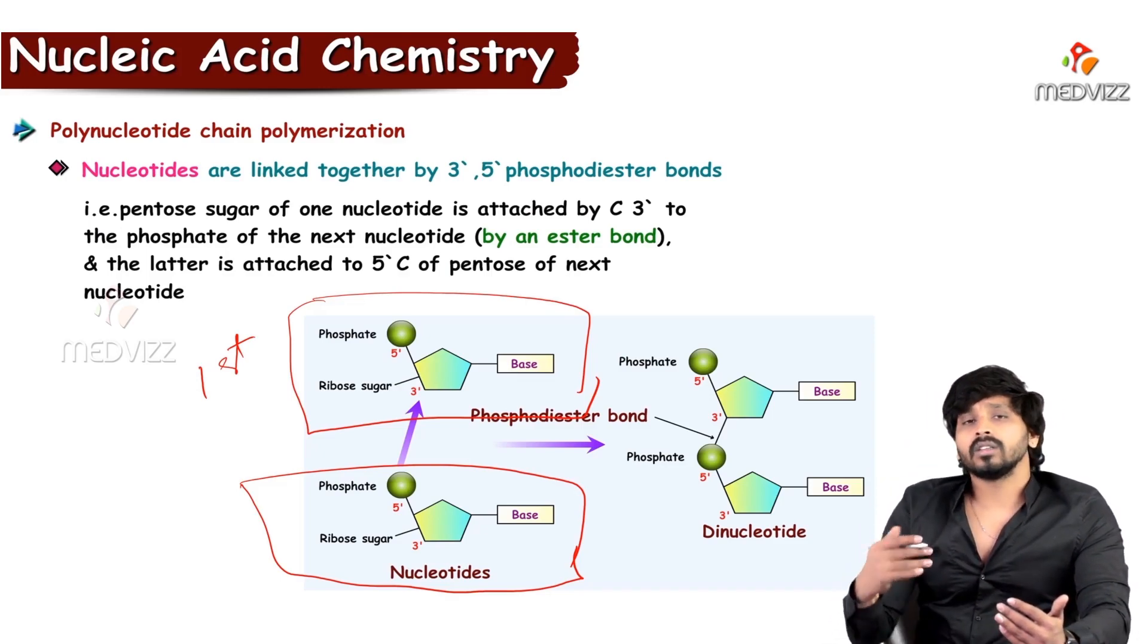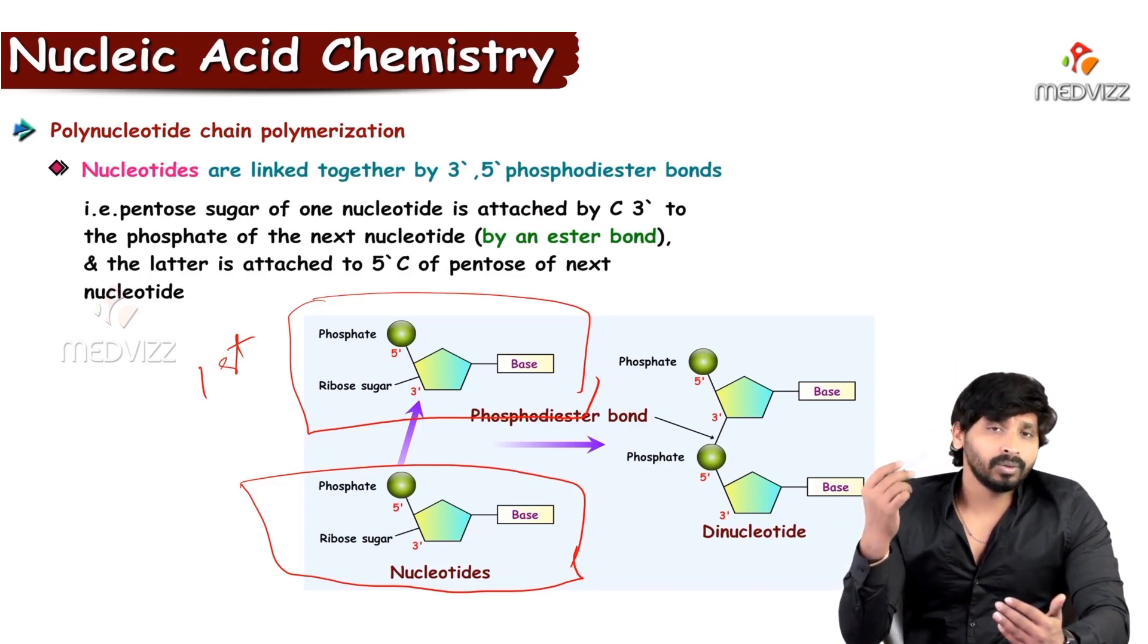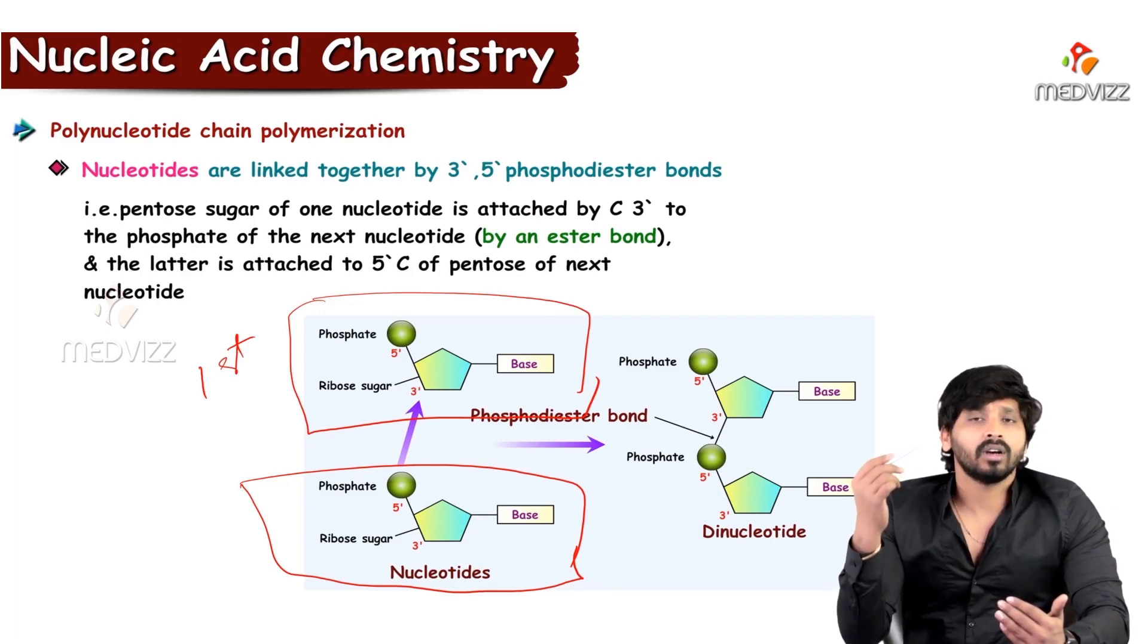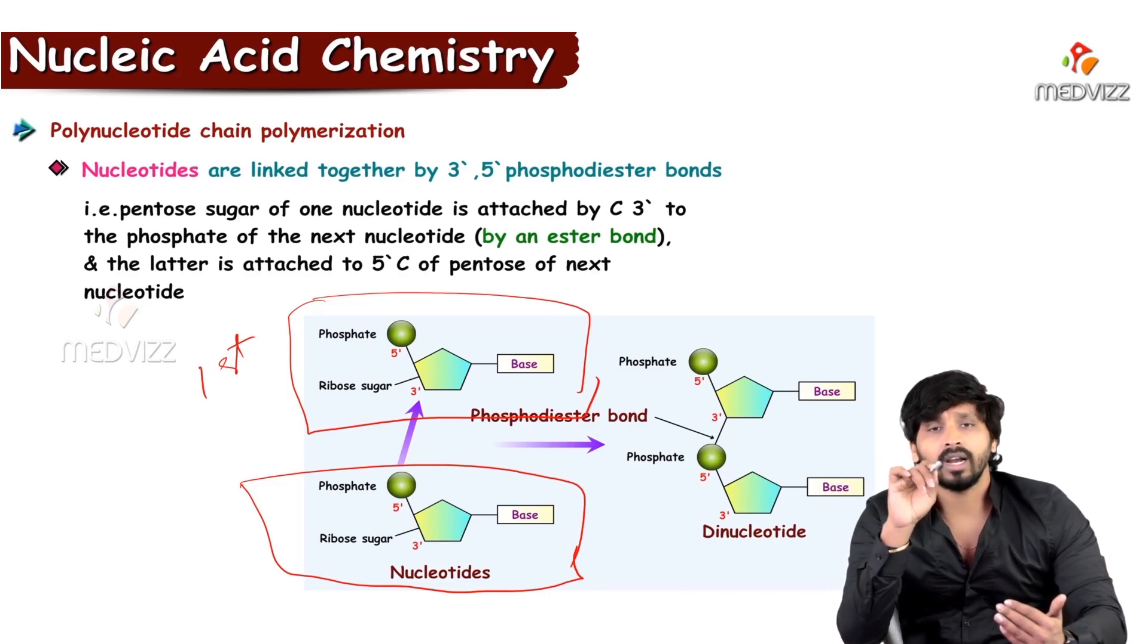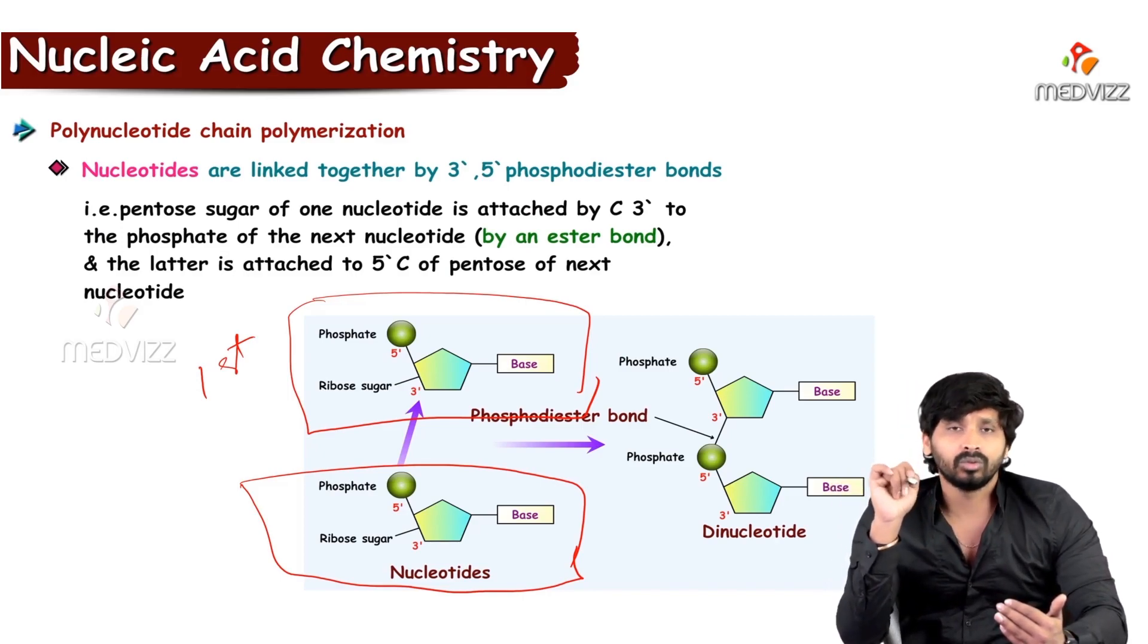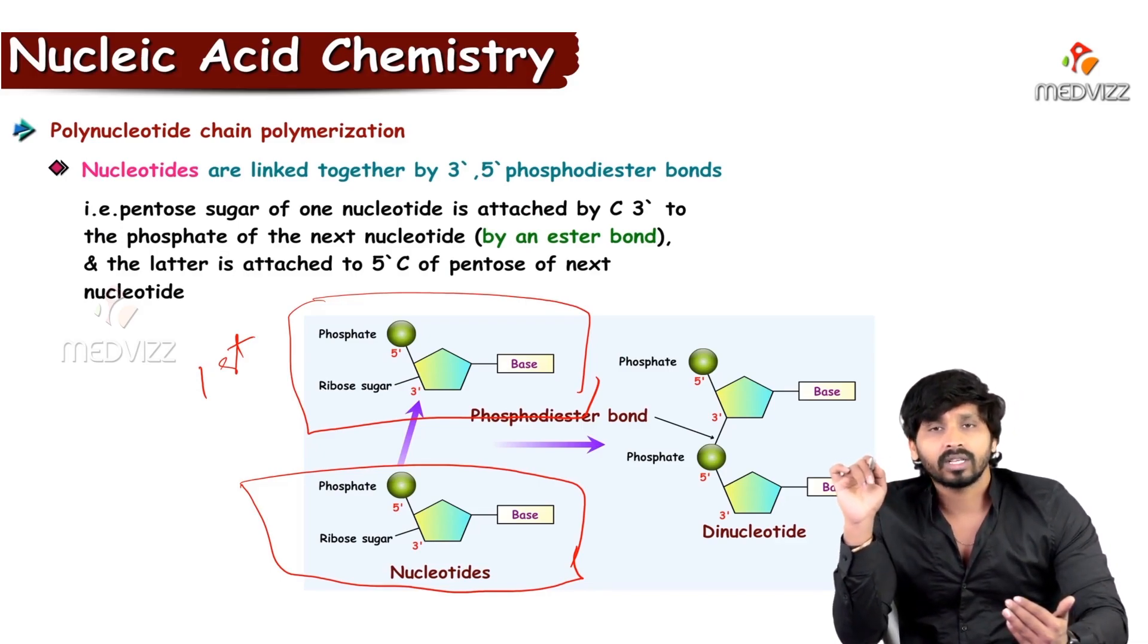So this way, the phosphodiester linkage is making between third carbon of the sugar of the first nucleotide and the phosphate group which is attached to the fifth carbon of the sugar of the second nucleotide. That means third carbon and fifth carbon of the two sugar units. So the phosphodiester linkage is named as 3',5' phosphodiester linkage.